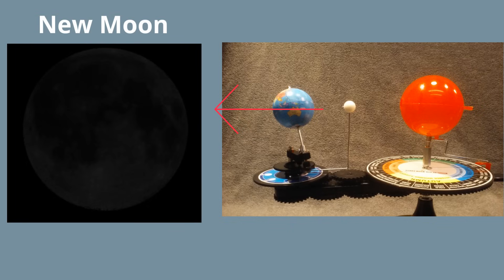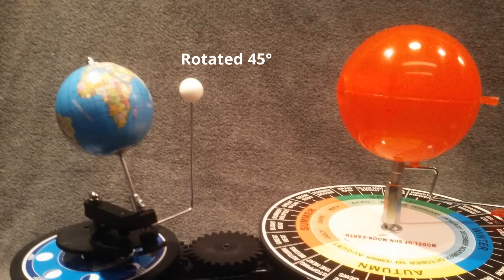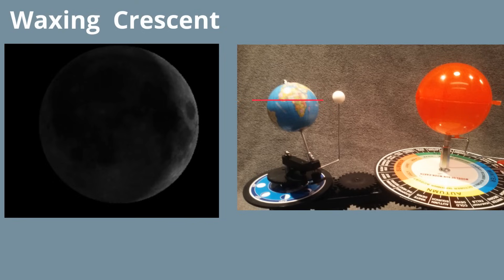The moon travels roughly 13 degrees in 24 hours. So after roughly 3 and a half days, the moon has moved 45 degrees and is at waxing crescent. Here's the alignment. Waxing means that the sunlight is getting larger and crescent is the shape. And here's what it looks like.